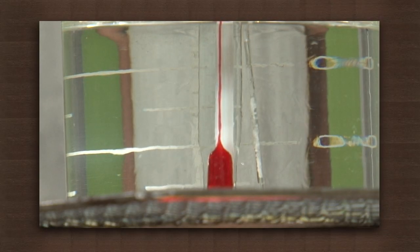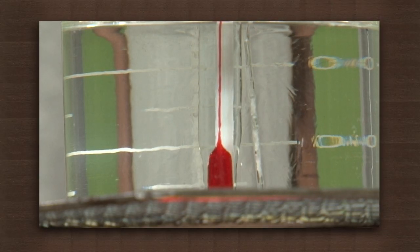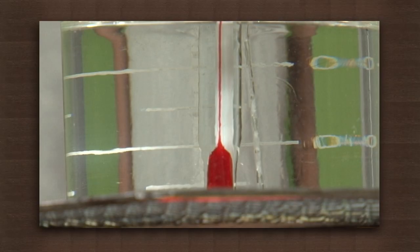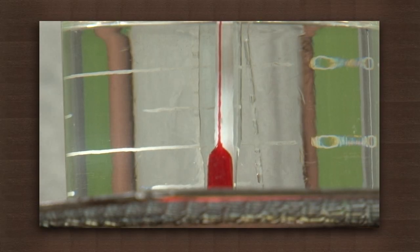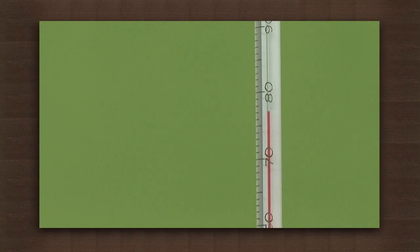Heat the glycerine now. You will notice that when the naphthalene powder gets fully converted to liquid, the capillary becomes clear. Note this temperature as the final reading — it reads 78 degrees Celsius.